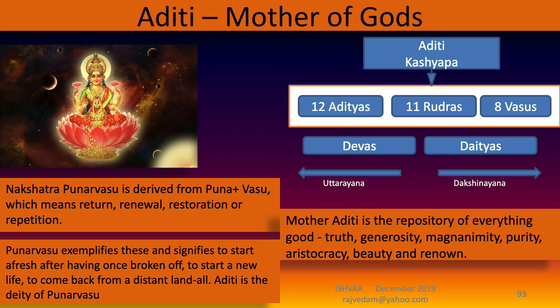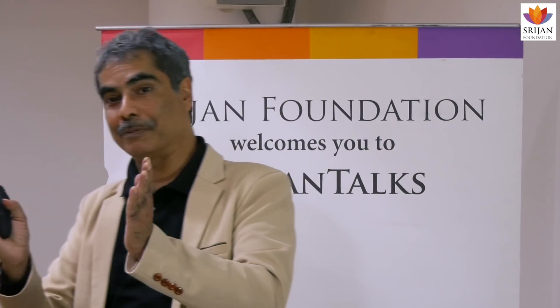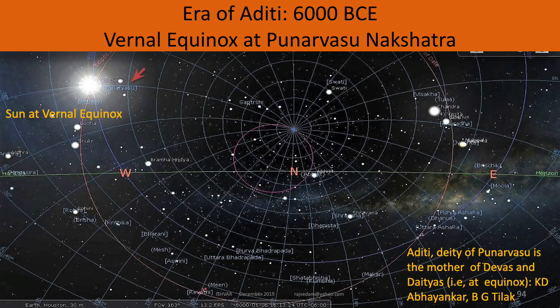All over India we talk about Aditi, mother of the Gods. Aditi and Kashyapa gave rise to the 12 Adityas, 11 Rudras, and 8 Vasus. From the Bhagavad Gita we know the Devas are part of Uttarayana and the Daityas are part of Dakshinayana. The Nakshatra Punarvasu's deity is Aditi. Since the mother is equidistant from both Devas and Daityas, we get the notion of equinox — referring to Aditi and Punarvasu Nakshatra. Lokamanya Tilak and Abhyankar said it refers to the vernal equinox at Punarvasu Nakshatra from the Rig Veda, dating that era to 6000 BCE.